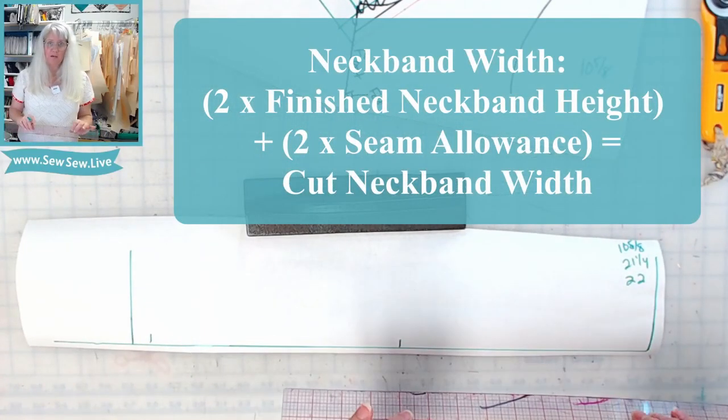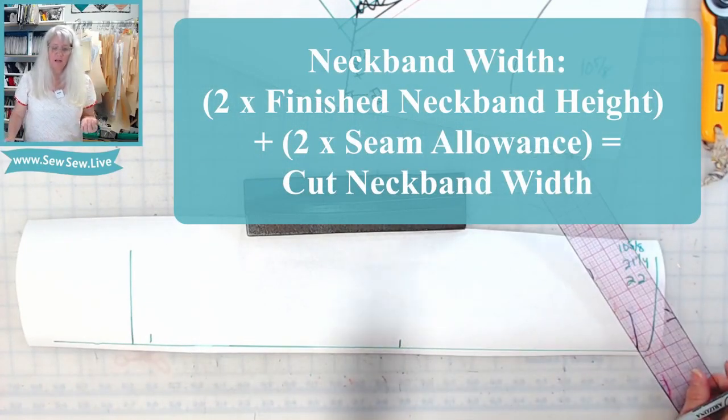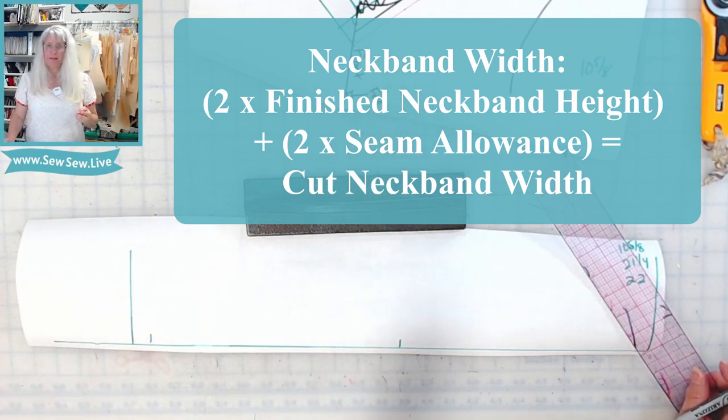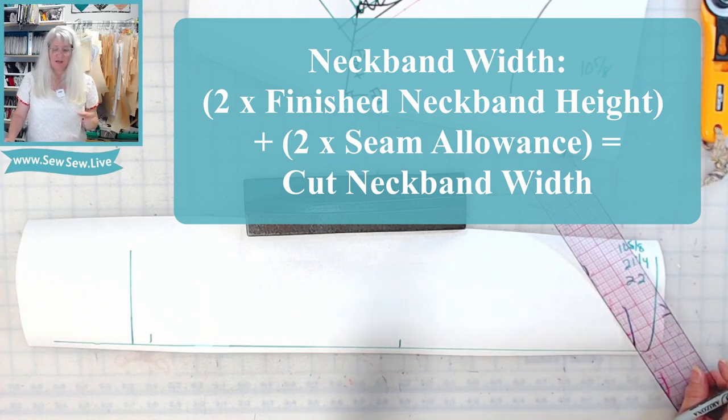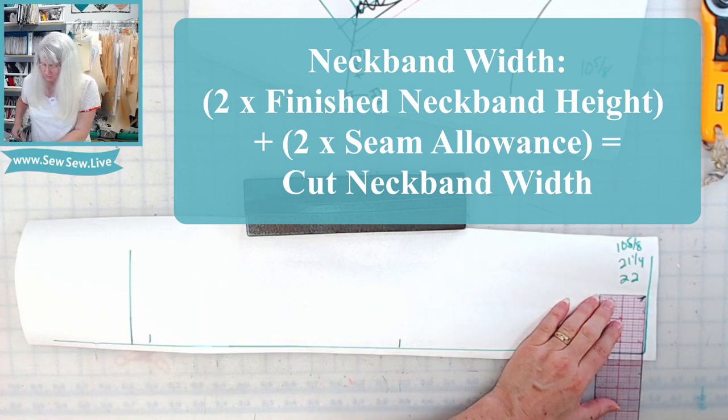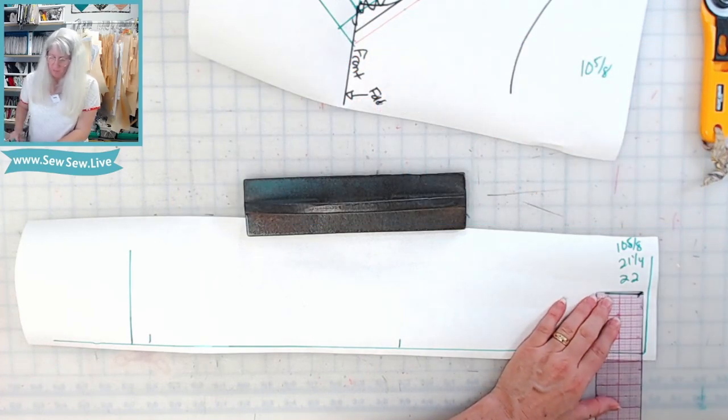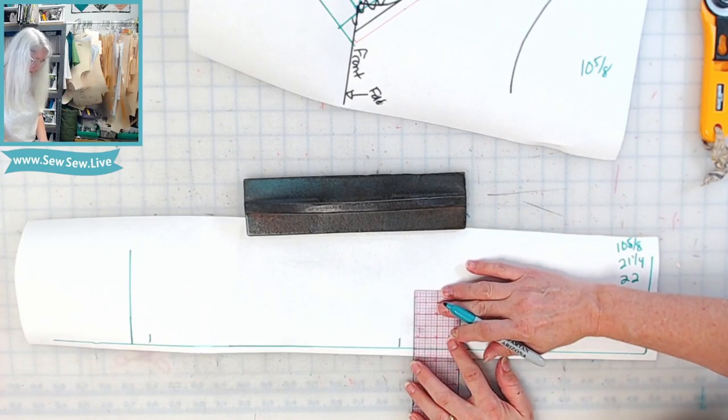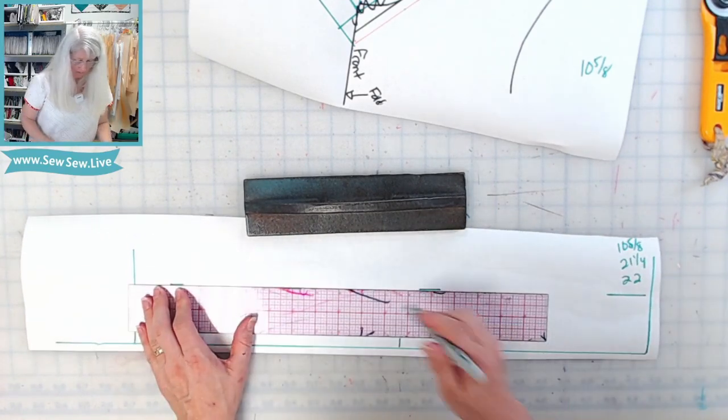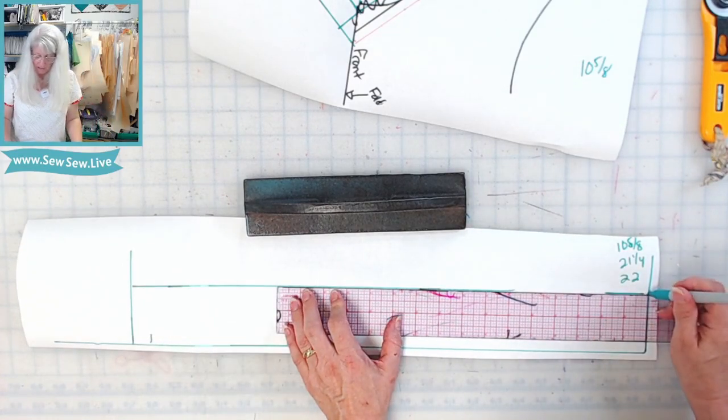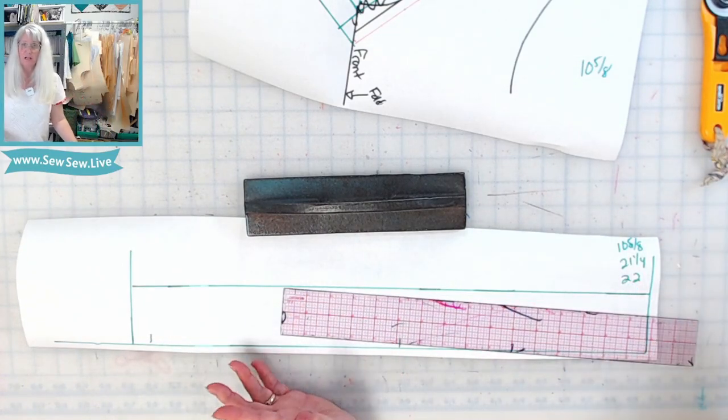Okay, now for the width, what you need to know is the height of your neckband, which you already knew from when you did your first line. You're going to double that and then you're going to double your seam allowance and add all four of those numbers together, and that's the width of your neckband. So for me, that's going to be two and a half inches because my finished neckband will be seven-eighths of an inch and then I have three-eighths of an inch seam allowance. Make sure that your rectangle is a perfect rectangle, especially when you're doing knits and things like that, because knits are already tough to cut.